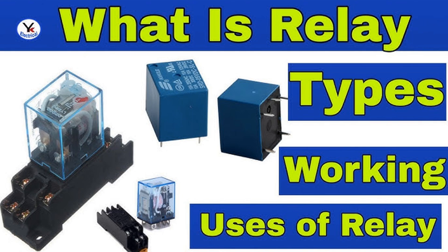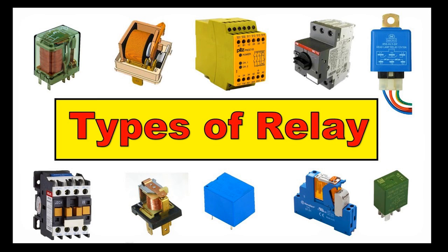Resetting the Relay: To change the state of the latching relay, the reset coil is energized with a separate control signal. This generates a magnetic field that counteracts the latching mechanism, releasing the armature and allowing the contacts to return to their initial position. No Continuous Power Required: One key advantage of latching relays is that they do not require a continuous power supply to maintain their state. Once set, they remain in that state until intentionally reset, making them energy efficient. Latching relays are commonly used in power distribution systems, telecommunications, memory circuits, and other situations where maintaining a specific state without continuous power is desirable.